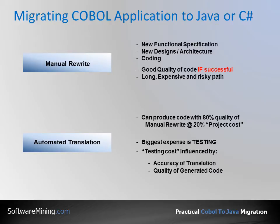The question becomes: if this meets the project objectives — namely maintainability, integration, enhancement, and so on — then is it justifiable to spend five times more to get that additional 20% quality? The biggest expense here is testing, which is influenced by the accuracy and quality of the generated code.